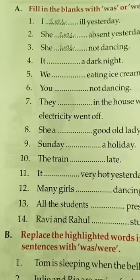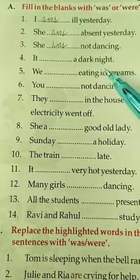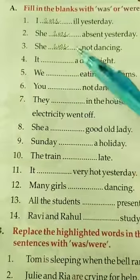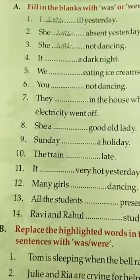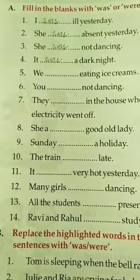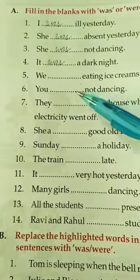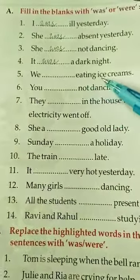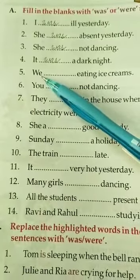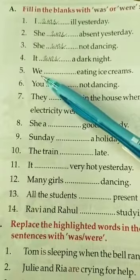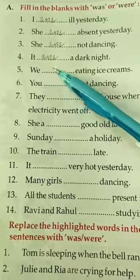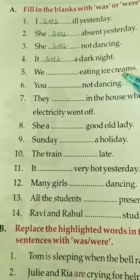Fourth part: 'It ___ a dark night.' Here 'it' is a singular pronoun, so we write 'was'. Answer: It was a dark night. Fifth part: 'We ___ eating ice creams.' Now 'we' is a plural pronoun — it refers to more than one person. So here we use 'were'. Answer: We were eating ice creams.